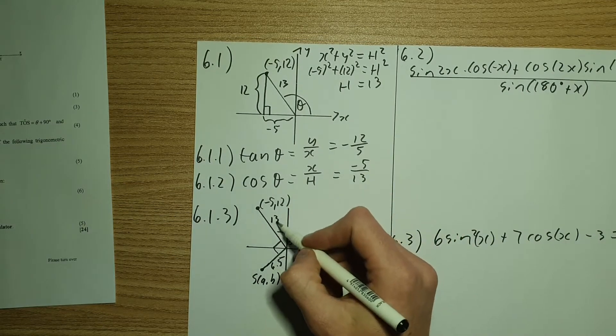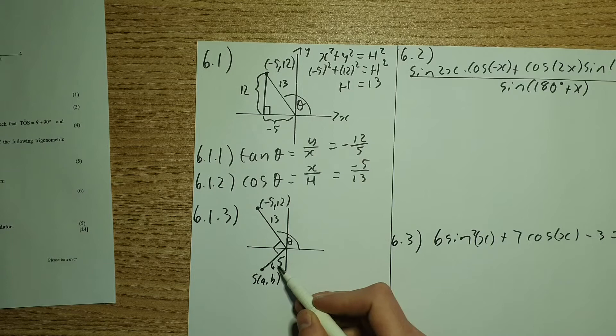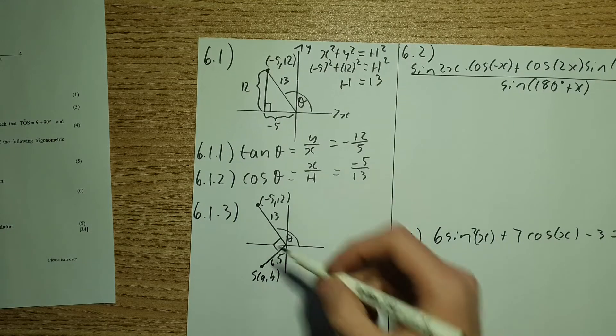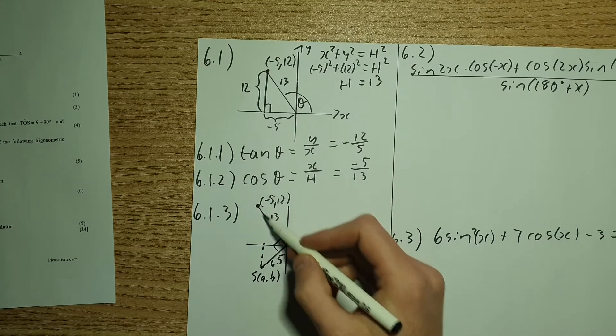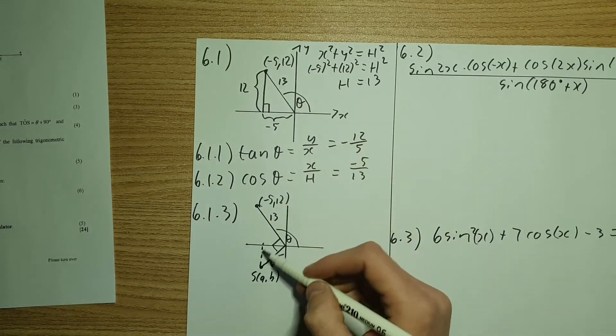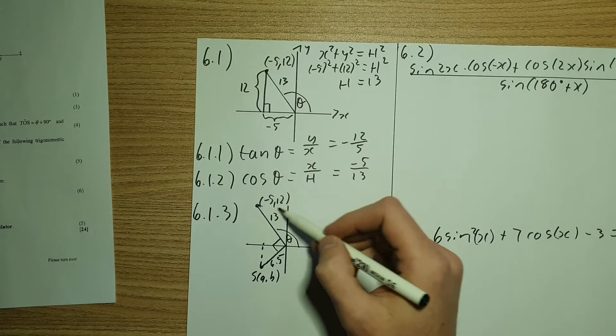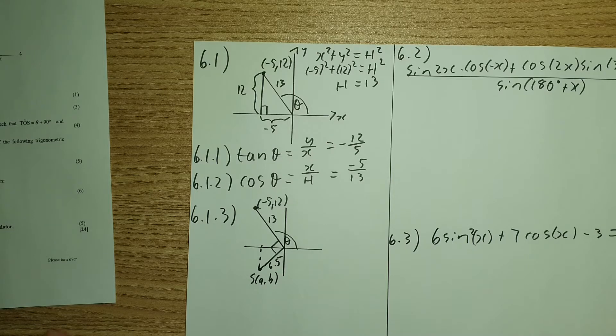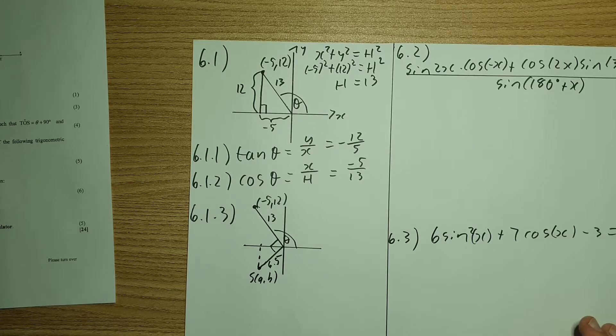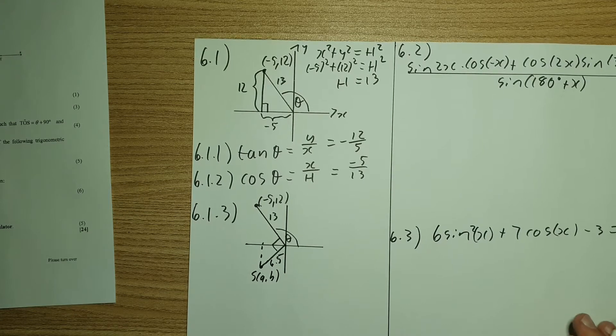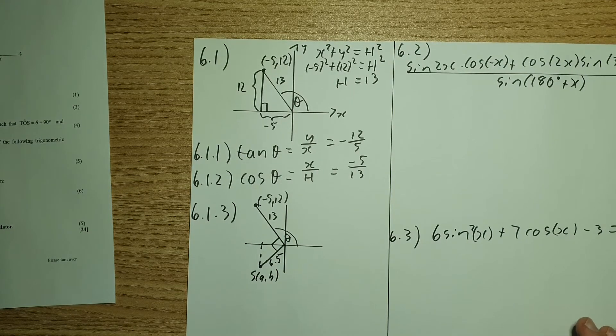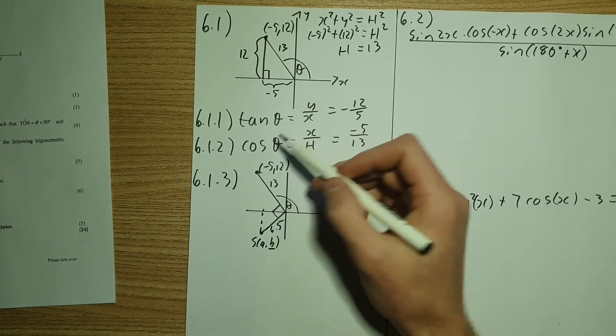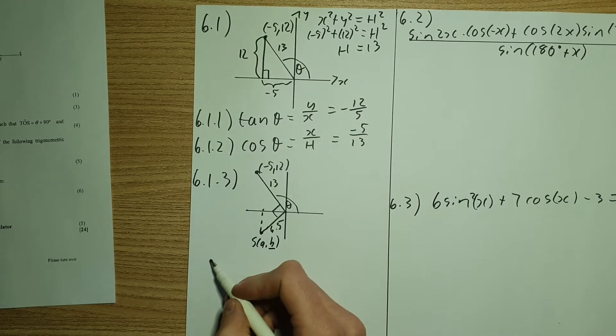So it then says calculate the B value. So we want to find the Y value. Now I've redrawn it over here. Please note, this length is 13, and that length is 6.5, which you can see that this has been halved. Now don't make the mistake and say that because this is half, my Y value is going to be half of this value over here. That's a big no-no.